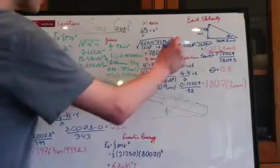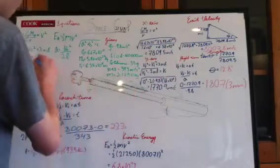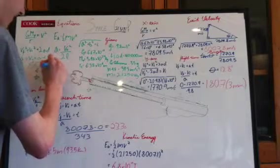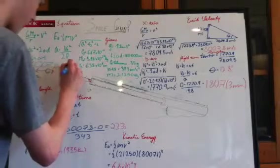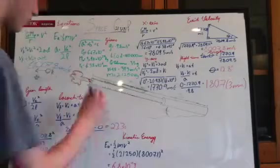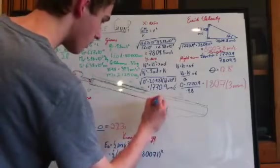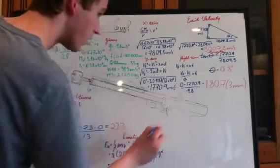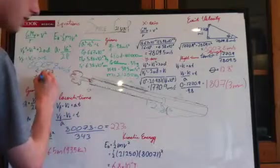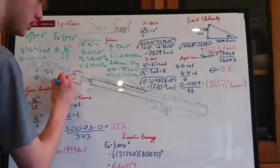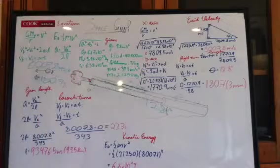So let's write these numbers down here on our gun. The time is going to be 180.7 seconds. So let's move on to the gun length.